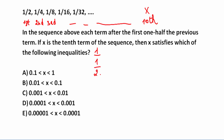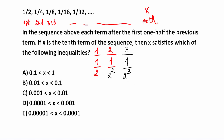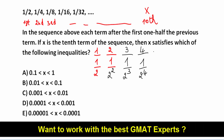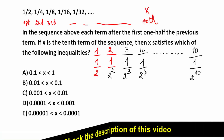The first term is 1 over 2. The second term is 1 over 4, and we can write 4 as 2 to the power of 2. The third term is 1 over 8, and 8 is 2 to the power of 3. The fourth term is 1 over 16, and 16 is 2 to the power of 4. So the tenth term is equal to 1 divided by 2 to the power of 10.